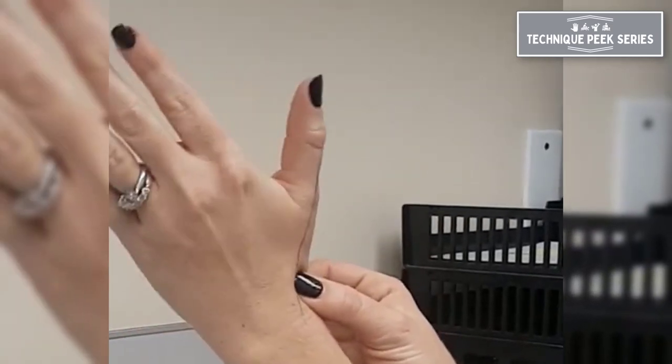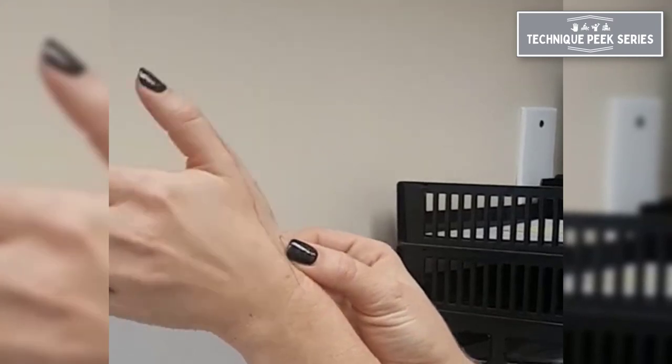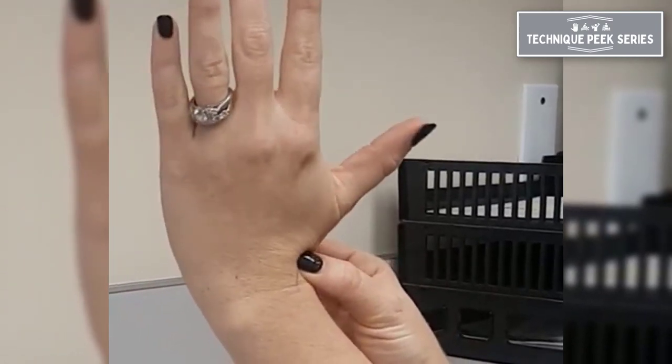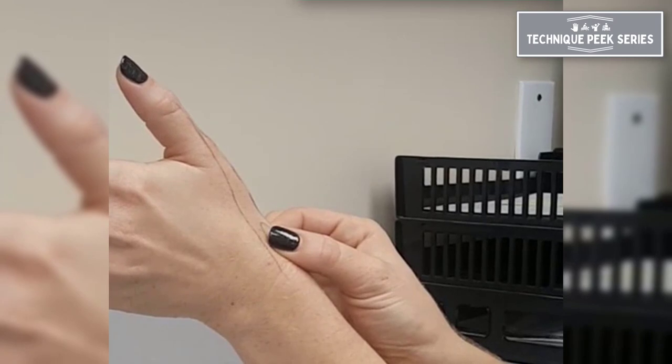and then back into radial deviation, where you should feel the scaphoid now coming volarly into your index finger. Going back and forth, if there is a ligament injury between the scaphoid and the lunate, you'll feel an audible clunk, pain, and possibly laxity.